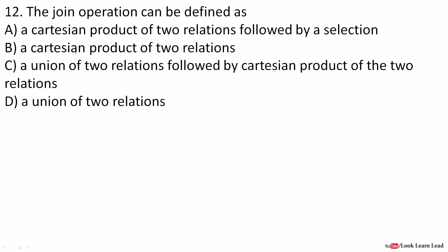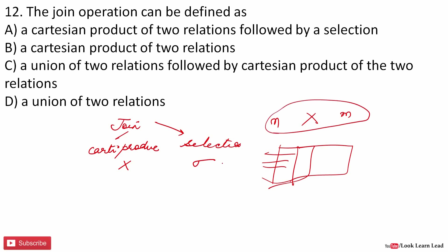The join operation can be defined as what? Generally the join operation is the combination of two, that is the Cartesian product followed by a selection operation. When we join two tables by Cartesian product, if one table has n rows and another table has m rows, the number of rows in the Cartesian product would be m cross n. Based on the selection, based on some condition, we can remove the unwanted tuples, so it would become a join. It is Cartesian product of two relations followed by a selection. A is our answer.